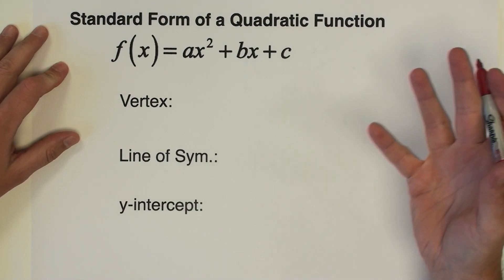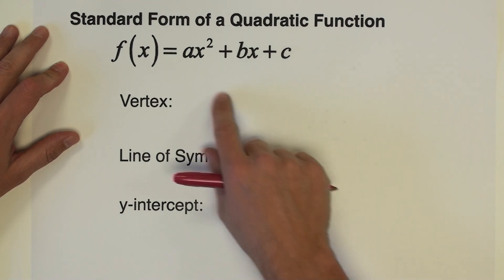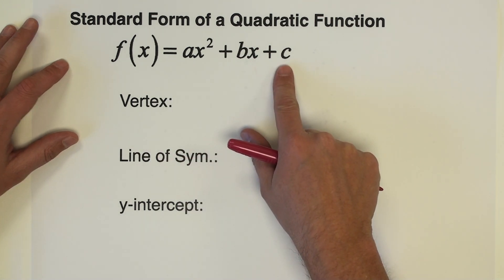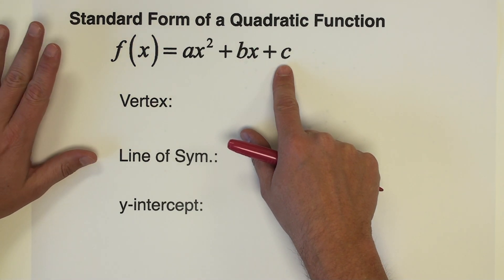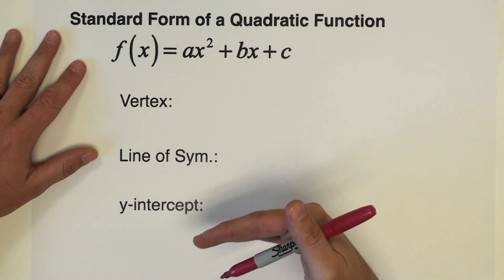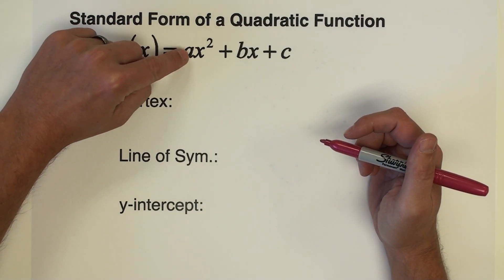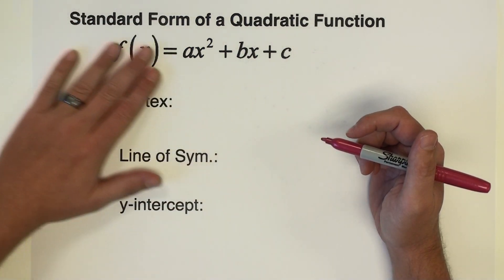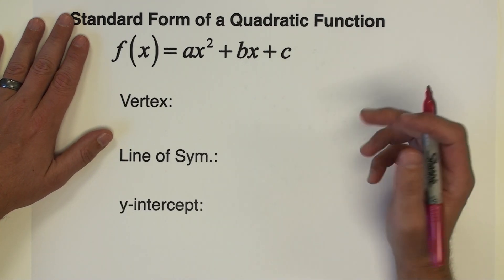When I say it's going to be a little bit different than vertex form, the most notable difference is that it's not written transformationally anymore. We have all the terms of this quadratic function expanded out, so we can't just look at this and see where the vertex moves left or right, up and down. We can't see any of that.